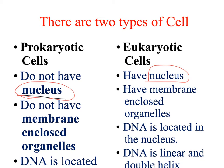Prokaryotic cells do not have membrane-enclosed organelles such as mitochondria, chloroplasts, endoplasmic reticulum, or Golgi apparatus — prokaryotes have none of these. But eukaryotic cells do have membrane-enclosed organelles. In prokaryotic cells, DNA is located in the cytoplasm, but in eukaryotic cells, DNA is in the nucleus.